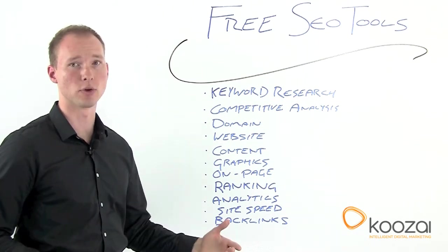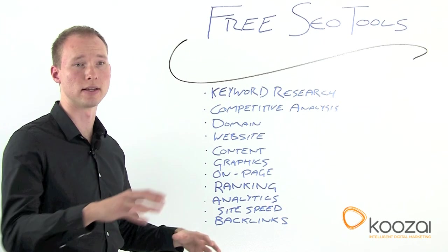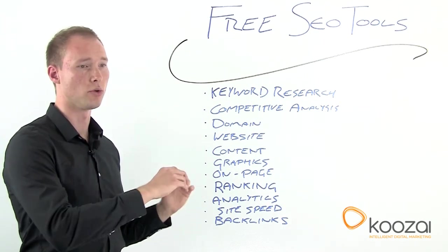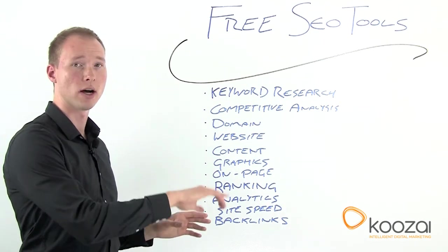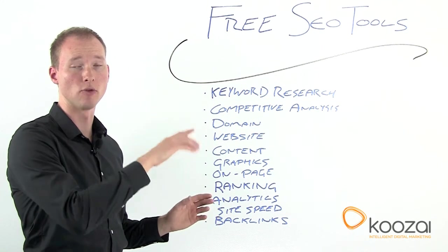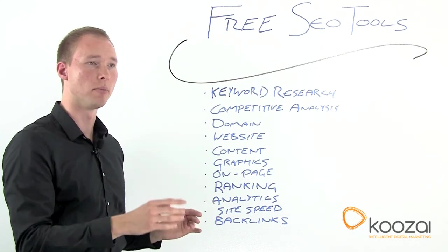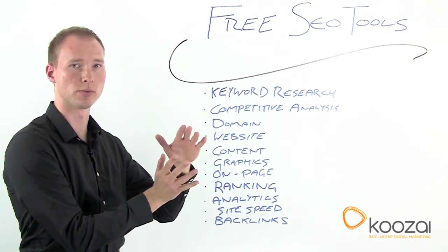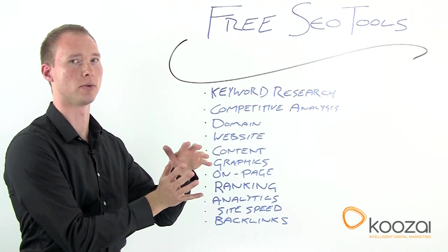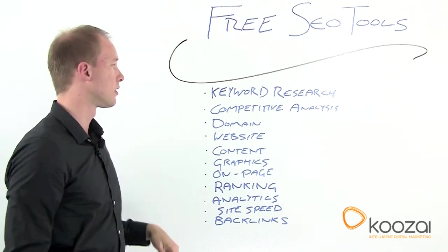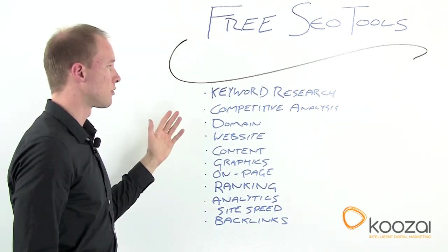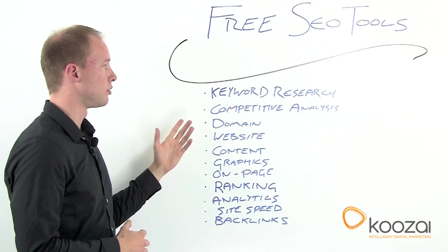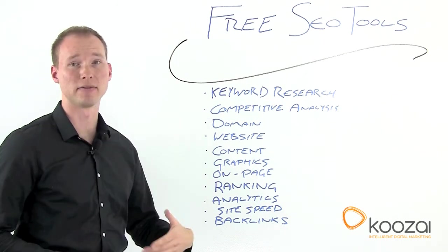Some slightly newer features are the keyword grouping and searching by category that you might be interested in. Something else you can use to tie into this is Google Insights, which will show you graphs of search queries over time, but they don't give you figures — it's just for finding relations between sets of keywords. Next, once you've got some keywords and you've got them grouped, is to look at some competitive analysis.